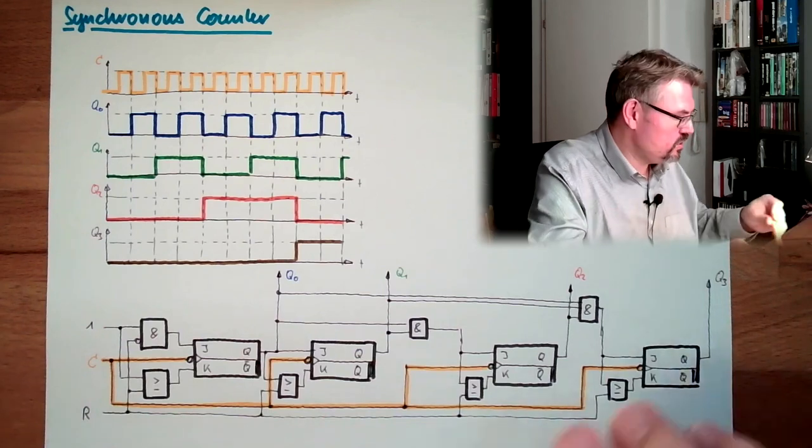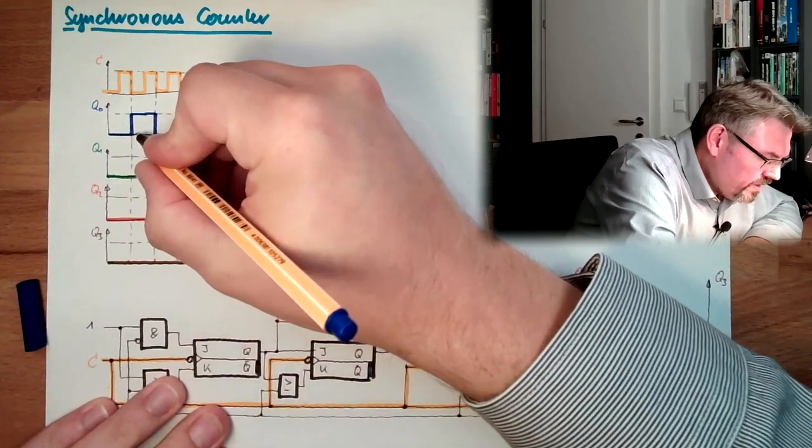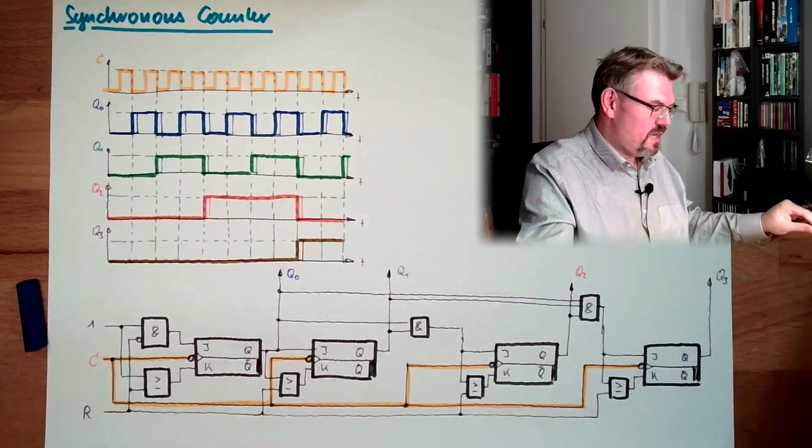And if all are switching at the same time, even if we would have some timing issue. So let's assume we have here latency. Then we will switch here later, we will switch here later. But the same amount later we will switch here. So it is not summing up. It just stays and switching offset. There is just an offset. And this offset is at Q0, at Q1, at Q2, everywhere the same, because we are switching at the same time. And if they offset, or maybe not exactly the same, but almost the same. And if we are switching at the same time, we have always the right counter value, or at least we have a valid counter value.